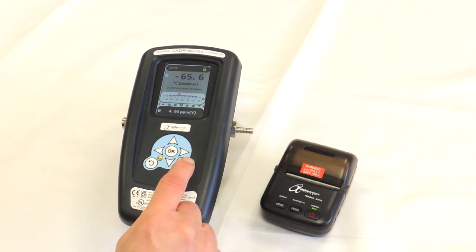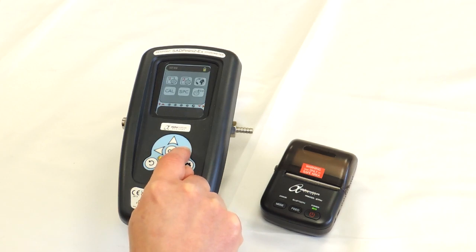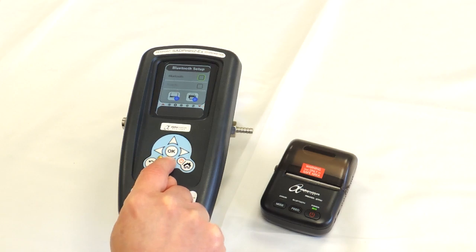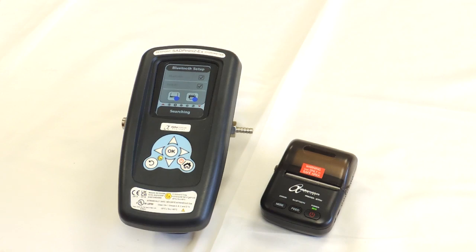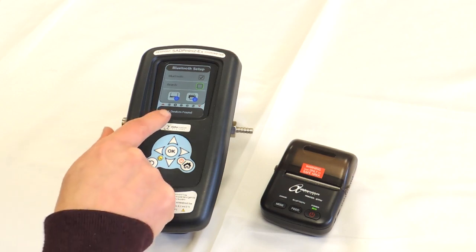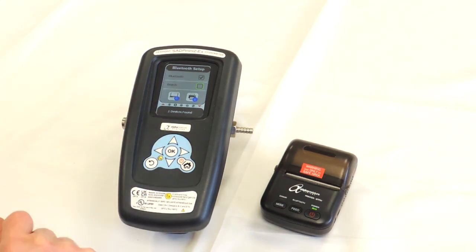Then on the Mini 2 EX we scroll through using the right arrow button through the menu screens until we get to the Bluetooth page. Then we press the down arrow and we select Bluetooth with OK. Then we're going to search for this Bluetooth printer by pressing OK. It's now searching as you can see on the screen and it will search until it finds the Bluetooth printer. And it says one device found and it indicates that on the screen.